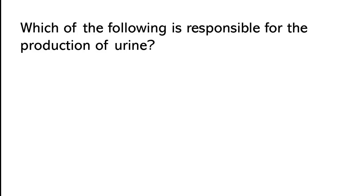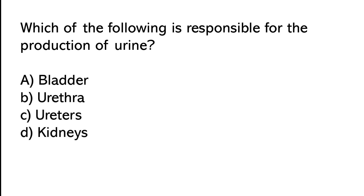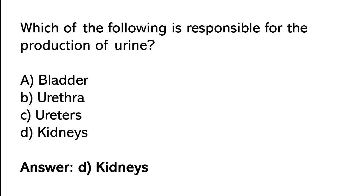Which of the following is responsible for the production of urine? Bladder, Urethra, Ureters, Kidneys. So the correct answer is option D.